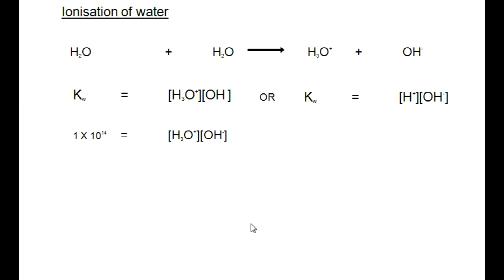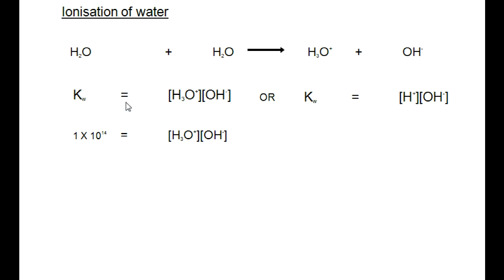We take the Kc value of water and write the equilibrium expression for the reaction. We must say concentration of products over concentration of reactants. The products are H3O+ ions and OH- ions, divided by the concentration of the reactants. However, water is a liquid, so H2O does not appear in the denominator.